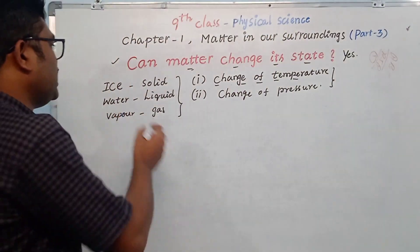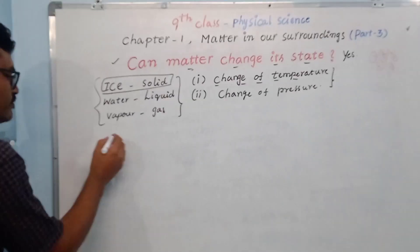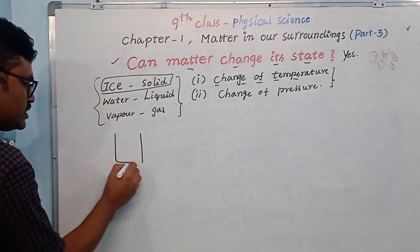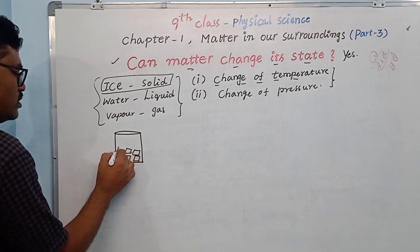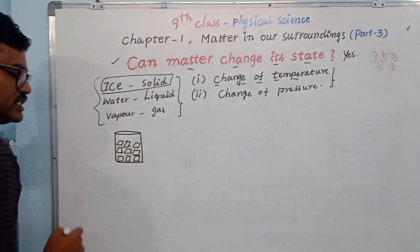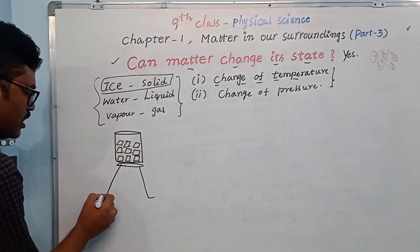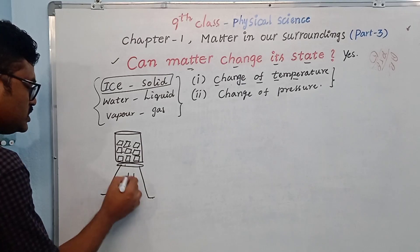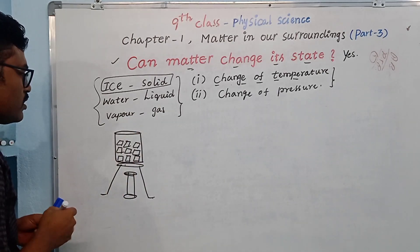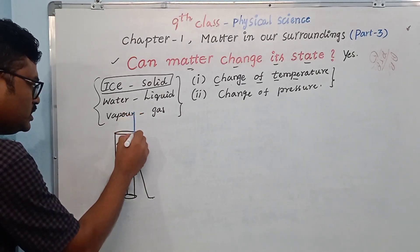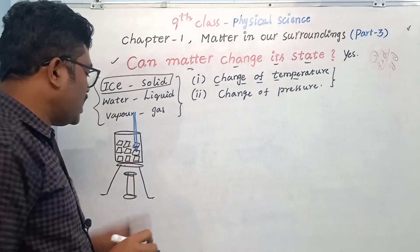Let us consider an activity to understand the effect of change of temperature. We will take ice which is in solid form. We are taking some ice cubes in a beaker, which is placed on a tripod. Under this, we are using a Bunsen burner. We are also taking a thermometer.